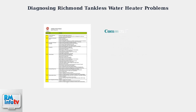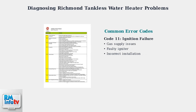Error codes provide specific information about what's wrong with your system. Code 11 indicates ignition failure, which can be caused by gas supply problems, a faulty igniter, or incorrect installation.